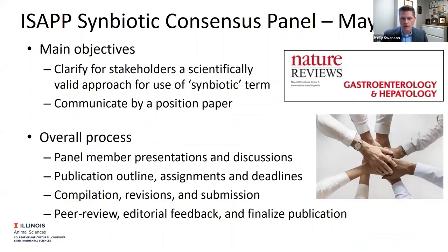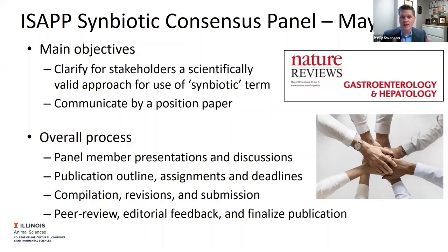The main objective was to clarify for all stakeholders the scientifically valid approach for using the symbiotic term — based on the science, how should we define what a symbiotic is, and then the criteria for judging what can be a symbiotic and what cannot be. We communicated that through a position paper in the Nature Reviews journal Gastroenterology and Hepatology. Most of those consensus papers are published there — they're open access and highly visible.